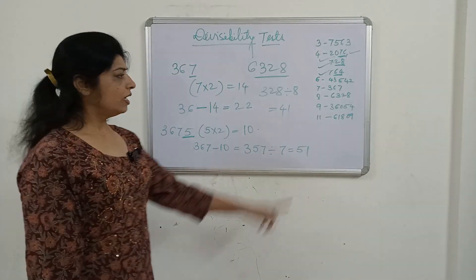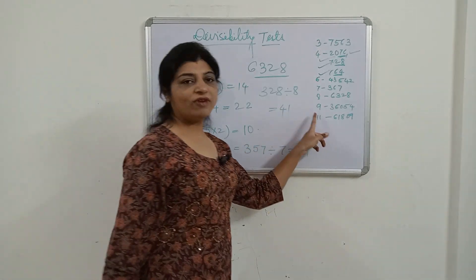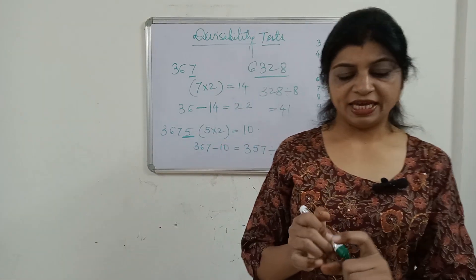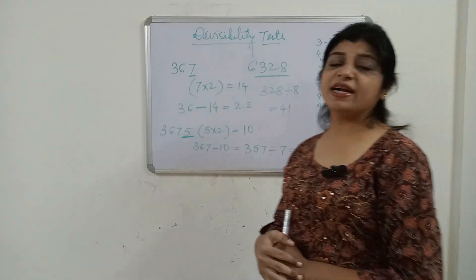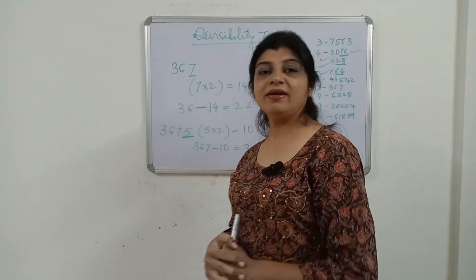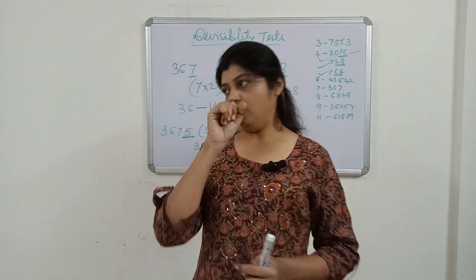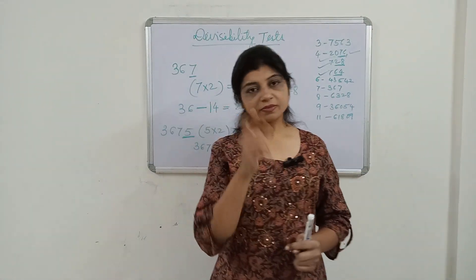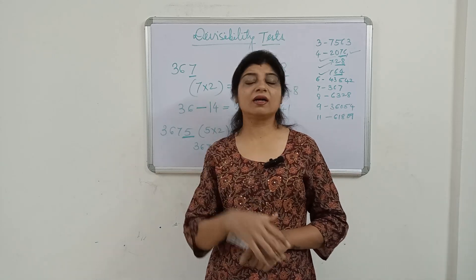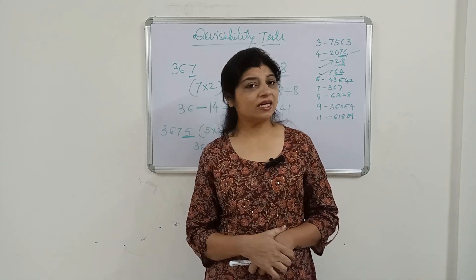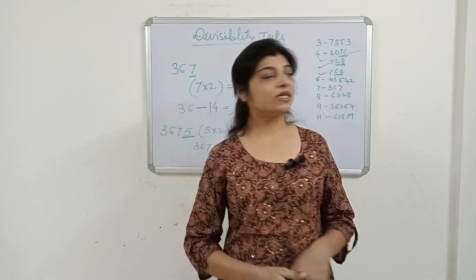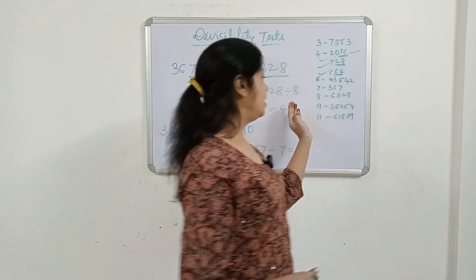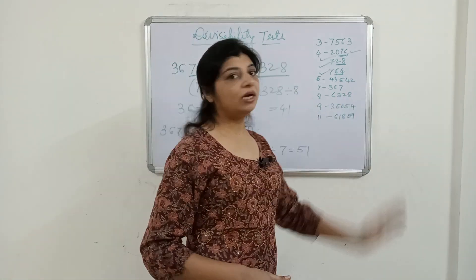Divisibility of 9 is the same as divisibility of 3. When you add the digits of a given number individually, whatever sum you get, if that sum is divisible by 9, then the complete number is also divisible by 9.